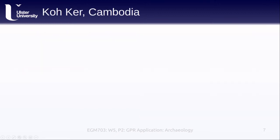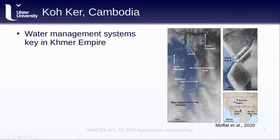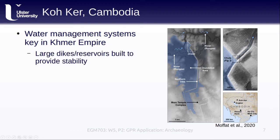Moving forward again in time and to the east, the next study comes from the site of Koh Khair in what is now Cambodia. In the middle of the 10th century, Koh Khair was the capital of the Khmer Empire, though only briefly. In the Khmer Empire, water management systems were key for both the stability and resilience of settlements, as well as symbolic of the legitimacy of the ruling classes. The Khmer Kings built large dikes and reservoirs to help store water and mitigate the seasonality of the monsoons. The remains of one of these projects, shown here just north of Koh Khair, illustrates the scale involved.